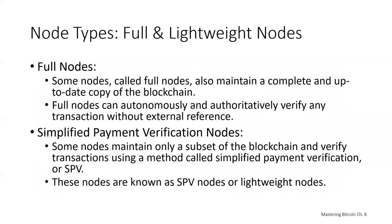Some nodes called full nodes also maintain a complete and up-to-date copy of the blockchain. Full nodes can autonomously and authoritatively verify any transaction without external reference. Some nodes maintain only a subset of the blockchain and verify transactions using a method called simplified payment verification, or SPV for short. These nodes are known as SPV nodes or lightweight nodes.